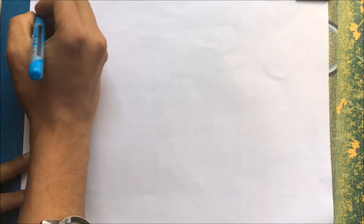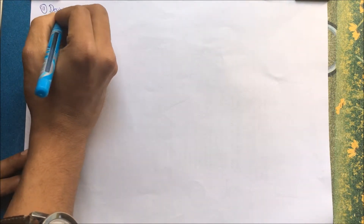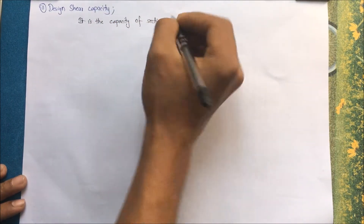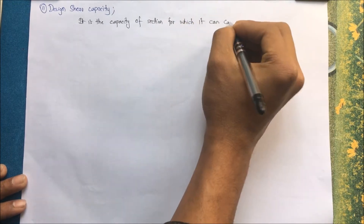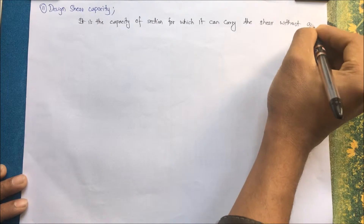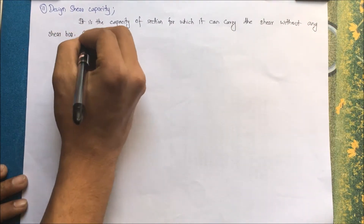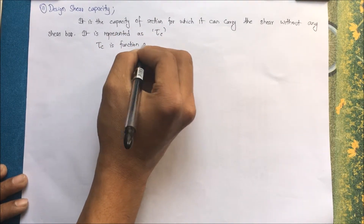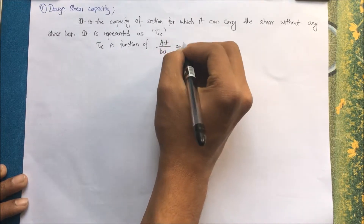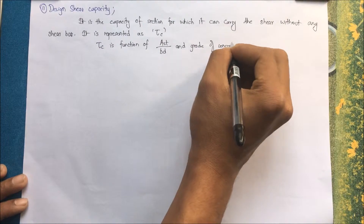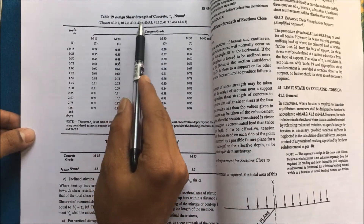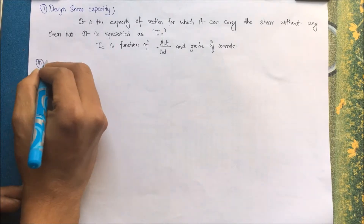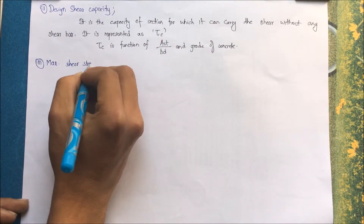The design shear capacity is the capacity of the section to carry shear without any shear bar — that is, shear in the beam is resisted by the concrete itself. It is represented as τc. τc is a function of (Ast/BD × 100%) and grade of concrete, as seen from the IS code table. τmax is also calculated from the IS code according to the grade of concrete.